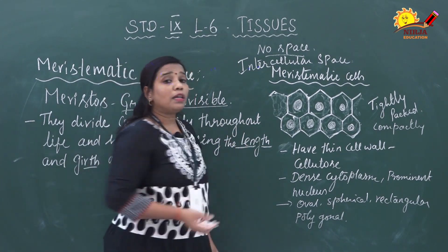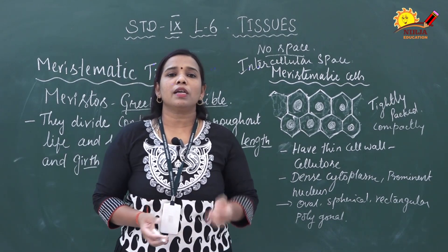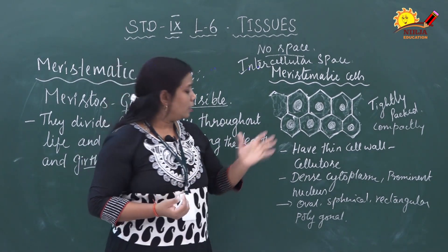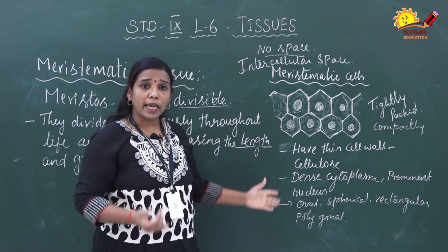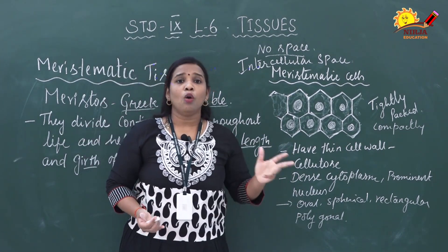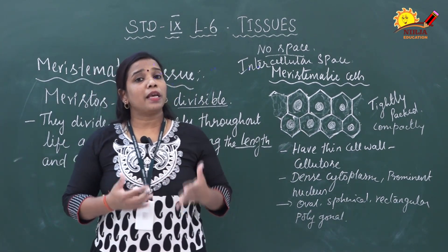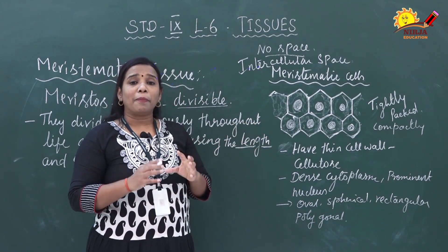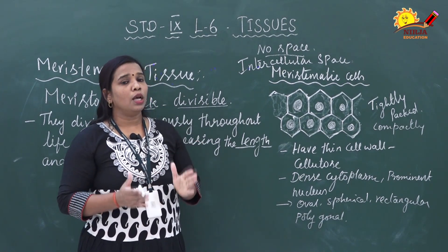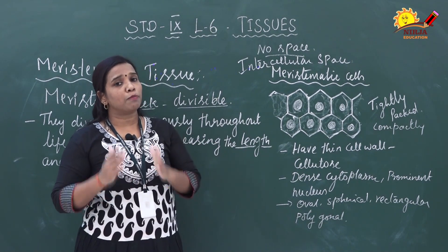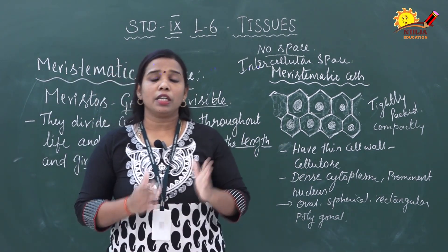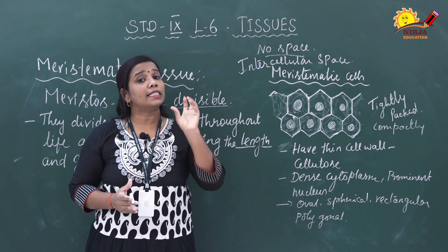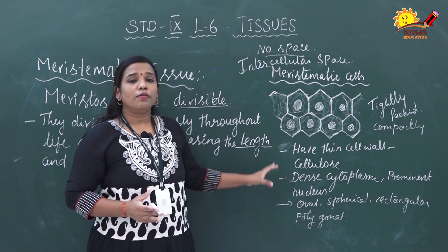Meristematic cells have very small vacuoles; some cells have a few small vacuoles while others contain none at all. To summarize the characteristic features of meristematic cells: they are in different shapes (circle, oval, triangular, or polygonal); they are tightly or compactly arranged with no intercellular space; the cell wall is thin and made of cellulose; the cytoplasm is dense; and a prominent single nucleus is present at the center of the cell.